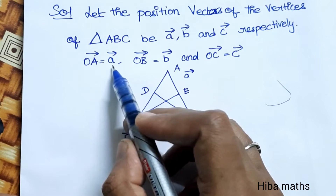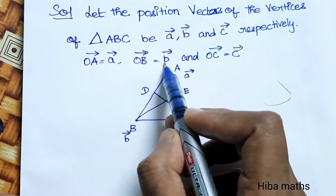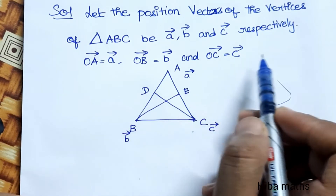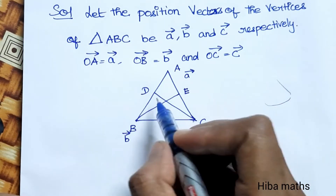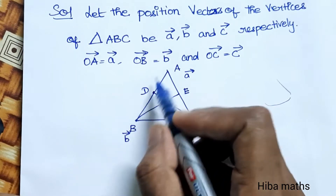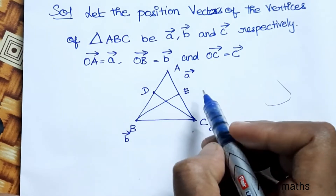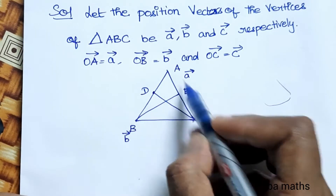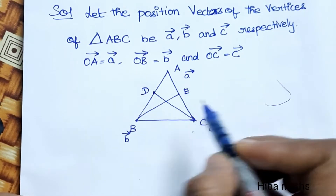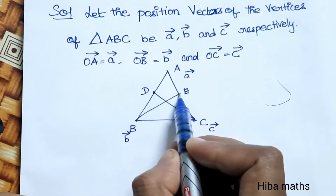Now we have triangle ABC. With reference to origin O: OA is A vector, OB is B vector, OC is C vector. D is the midpoint of side AB, and E is the midpoint of side AC.